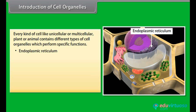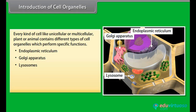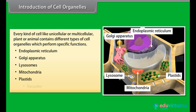Endoplasmic reticulum, Golgi apparatus, lysosomes, mitochondria, plastids and vacuoles are some examples of these cell organelles. Now let us know their structure and functions in detail.